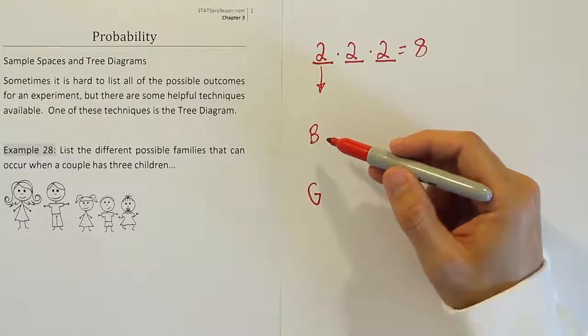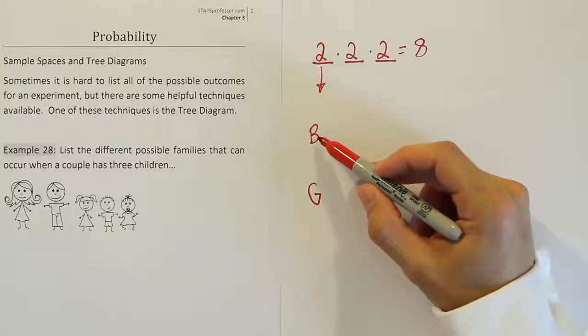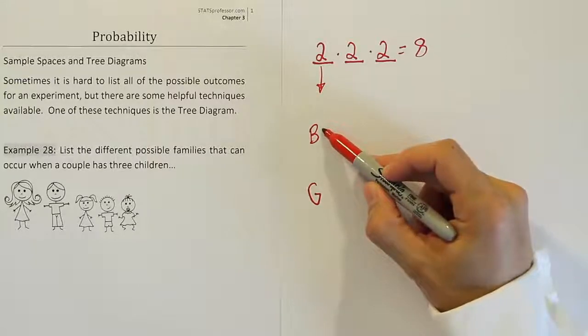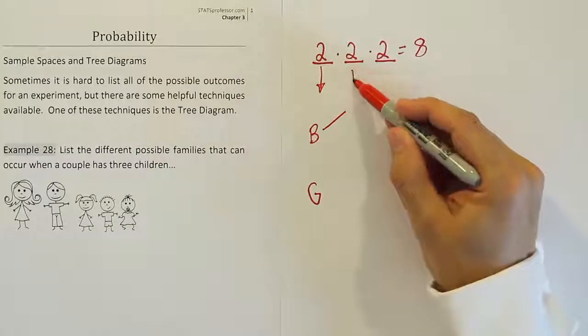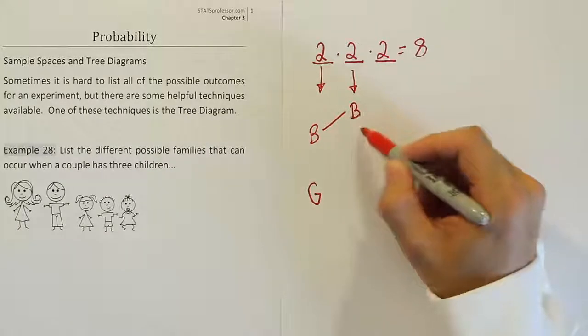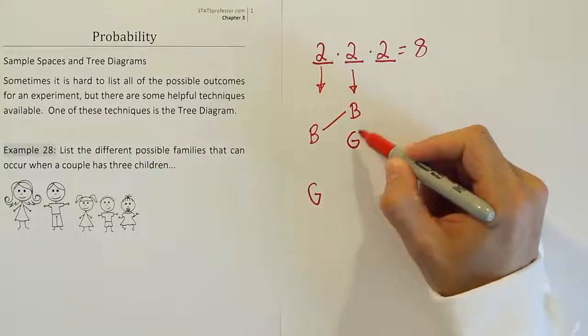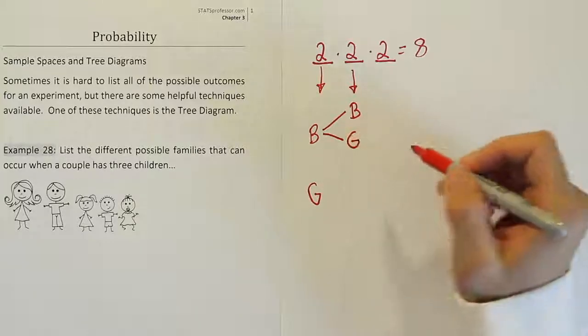Now, once you have that written down, the next step of the process is to say, well, if I were to have had a boy, the next child could be what? Well, the next child could be, again, either boy or girl. So the second birth could turn out to be either boy or girl. Alright, so that's your second birth.